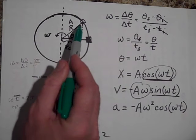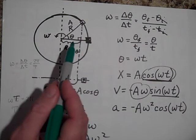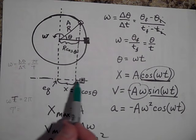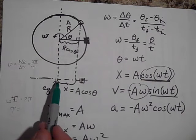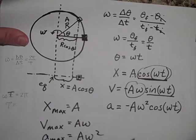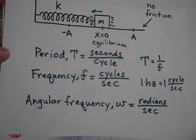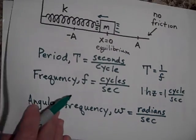Now it might bother you that this one's not going in a circle and we're still saying it has some radians. But 2π radians is one cycle. That's all we're going to say. So 2π radians is one cycle.